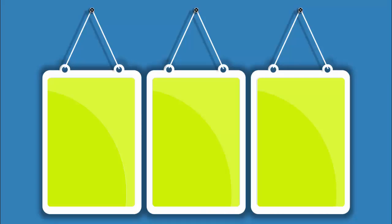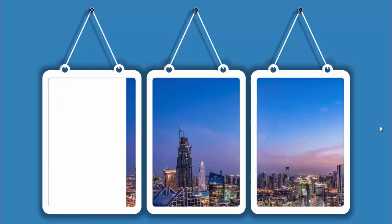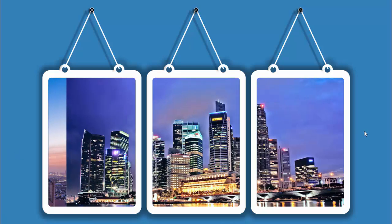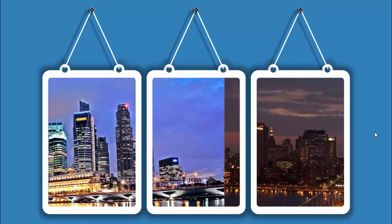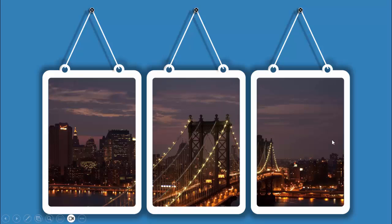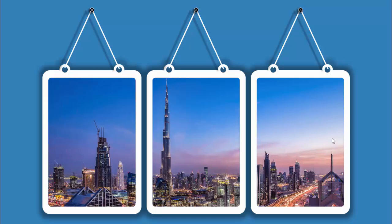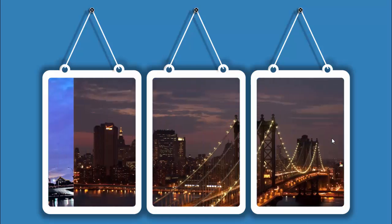In today's tutorial I'm going to show you how to create a hanging frame morph transition slide in PowerPoint. This is how the slide looks — I have created three hanging frames which hang with the help of a nail, and I've added a background. When I click, the first frame shows an image of Dubai downtown, the second is Singapore, and the third is Manhattan. Depending on the requirement you can increase or decrease these options and add images of your choice.